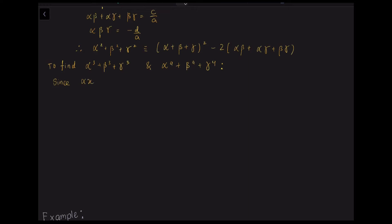Since ax³+bx²+cx+d = 0 has roots α, β, and γ, we can substitute each root into x and write the equations. The first one is: a·α³ + b·α² + c·α + d = 0, and this is equation 1.